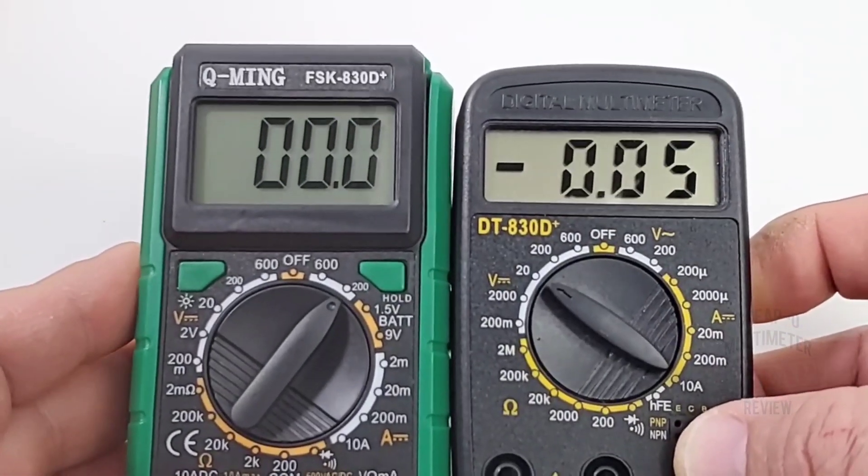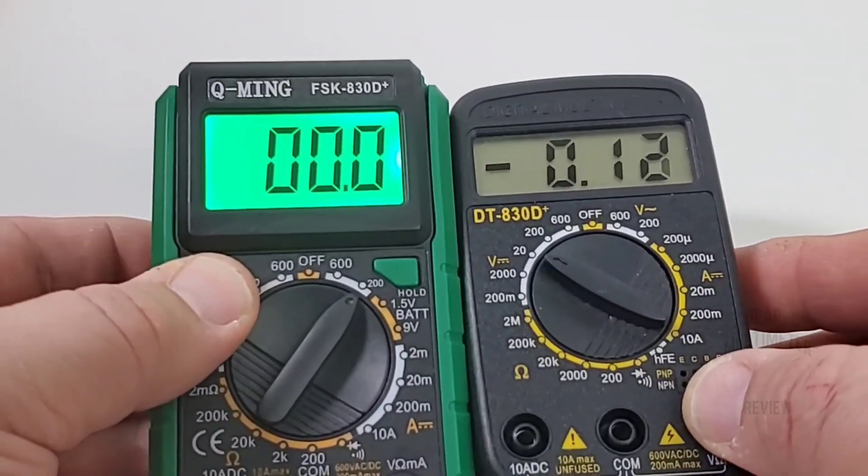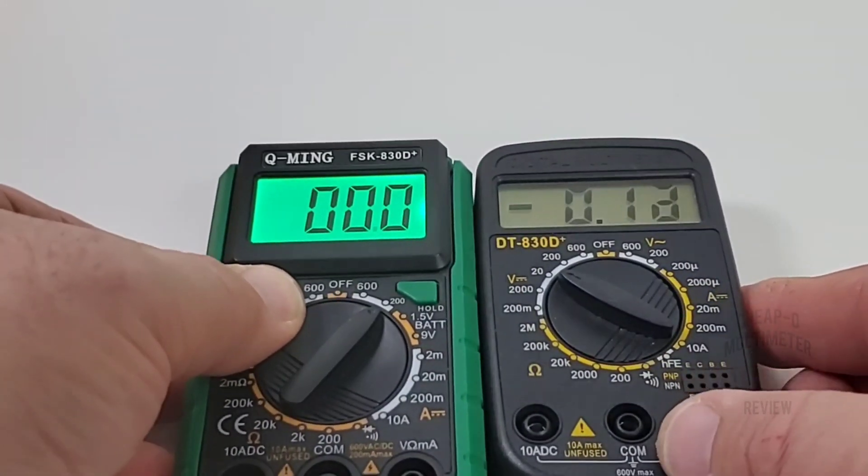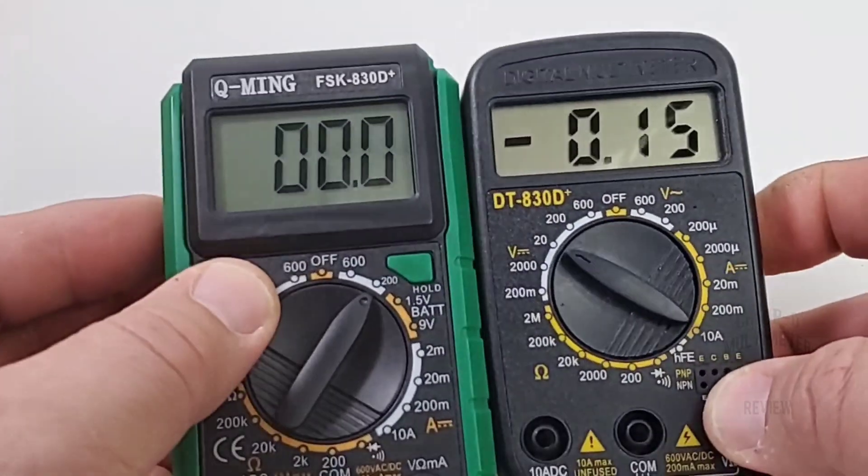Now the Q-Ming also has a backlight, look at that. This is a really nice looking green backlight. You don't have that on the 830D Plus clone on the right, so that is always a bonus.